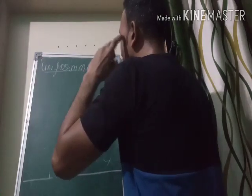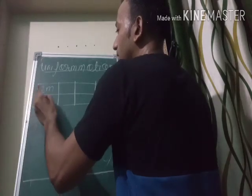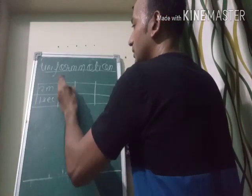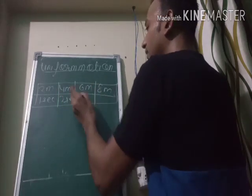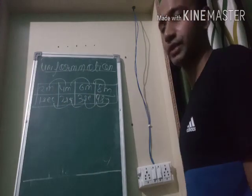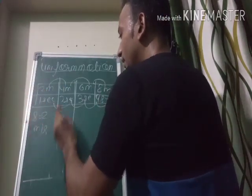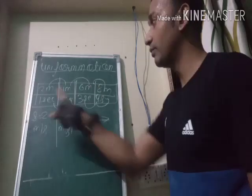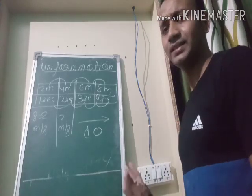Uniform motion: suppose a body moved two meters in one second, then another two meters in the next second — four meters total in two seconds — then six meters in three seconds, eight meters in four seconds. It is covering equal distance in equal intervals of time. This is called uniform motion. Calculating speed each time gives two meters per second consistently.